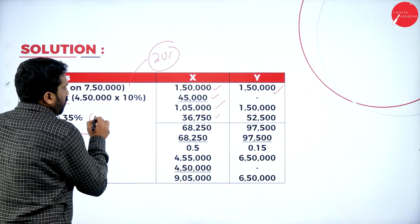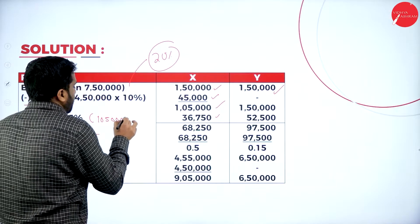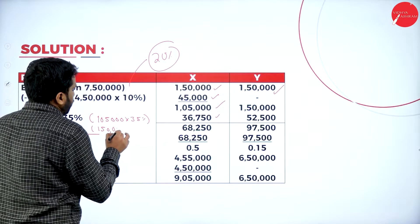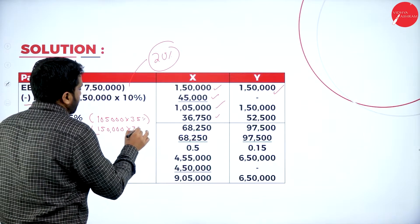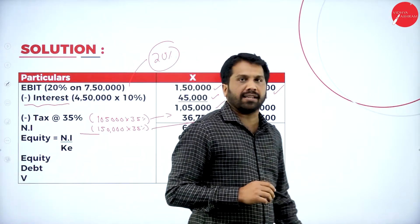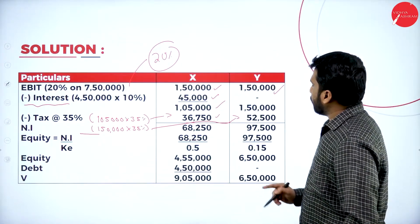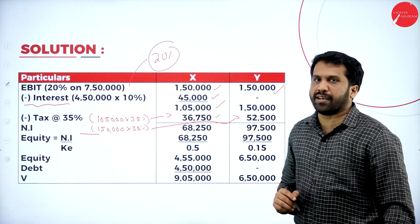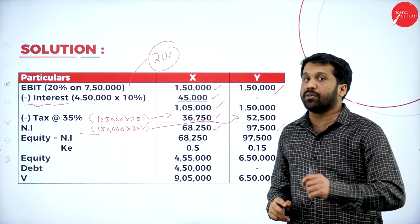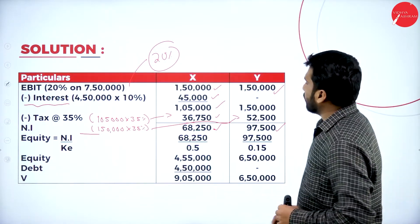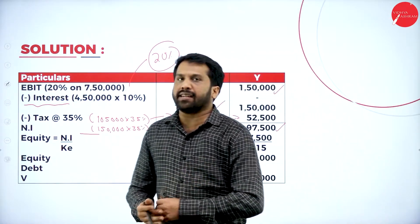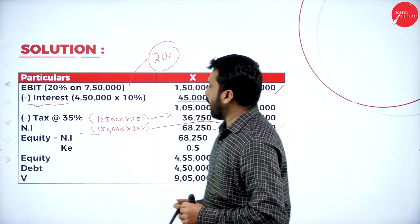Tax is 35 percent. For X: 1,05,000 × 35% = 36,750. For Y: 1,50,000 × 35% = 52,500. Subtracting tax, net income for X = 68,250 and net income for Y = 97,500.